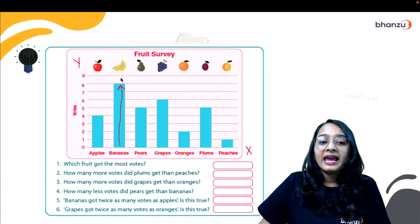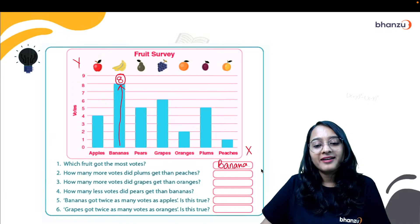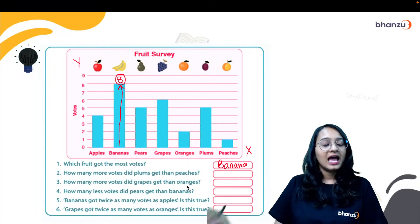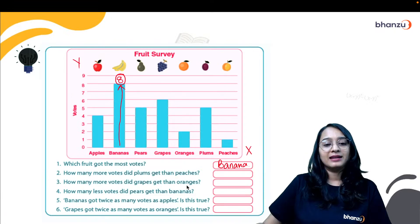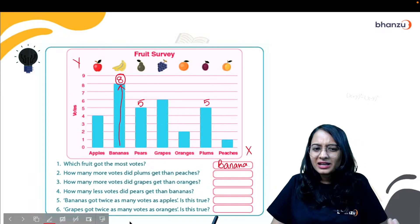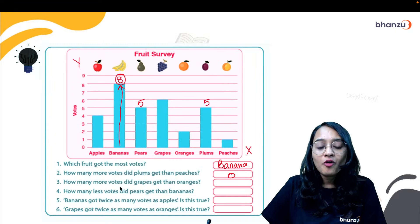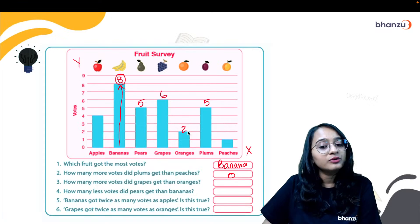Now which fruit got the most votes? Now whose length is the biggest? As you can see, banana's length is the biggest. 8 votes have gone for banana. So which fruit has the most votes? It is banana, right? And how many more votes did plums get than peaches? So peaches have 5 votes and plum also got 5 votes. So is there anything more that plum has got? No. So the answer would be just zero.